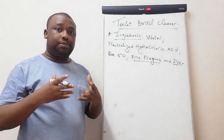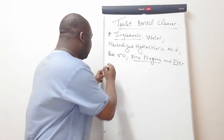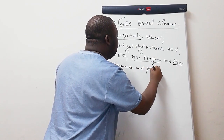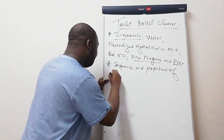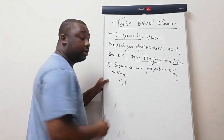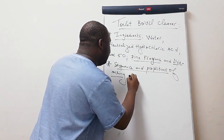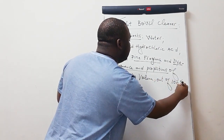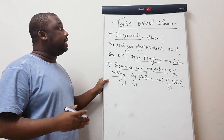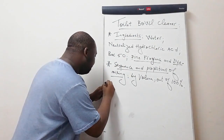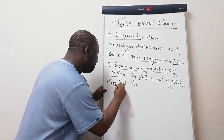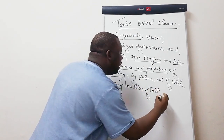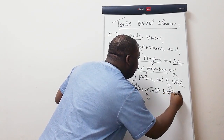Now let's get to the sequence and proportion of mixing the ingredients. This is done by volume. We'll consider making 100 liters of toilet bowl cleaner.